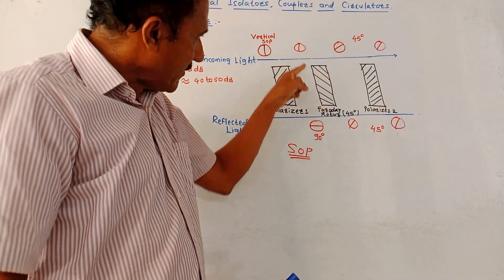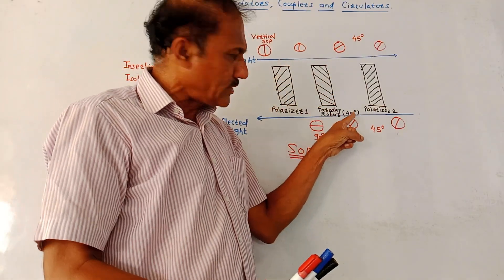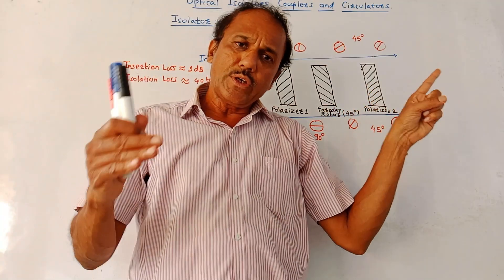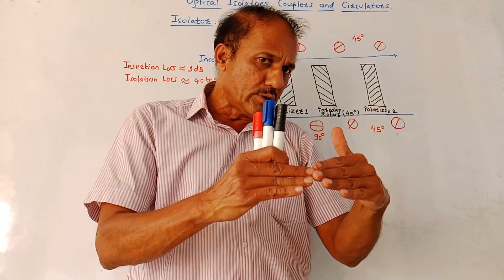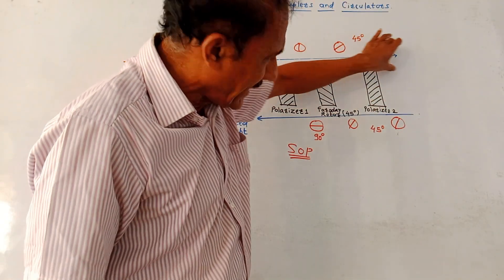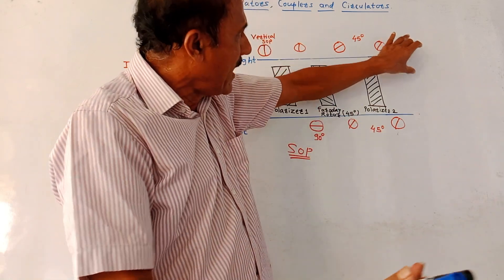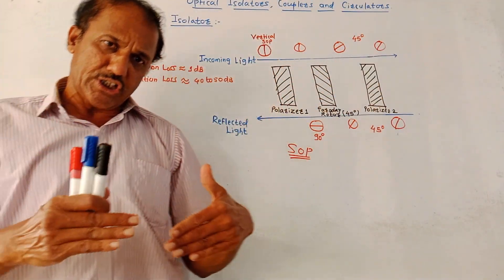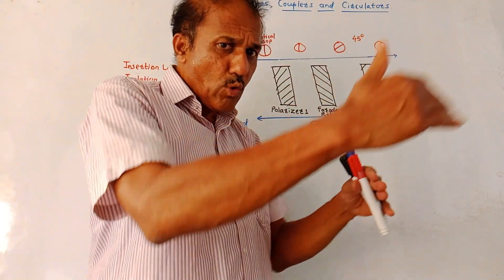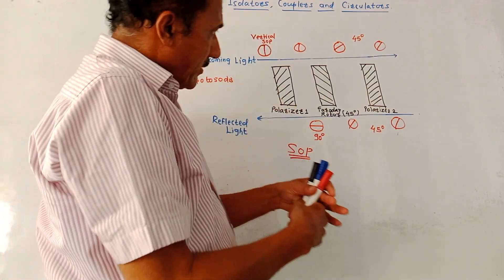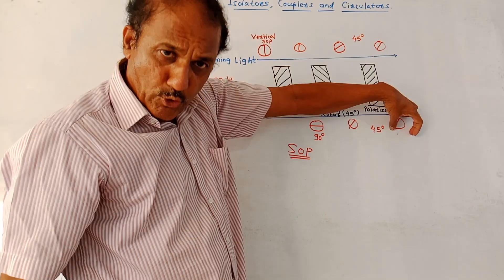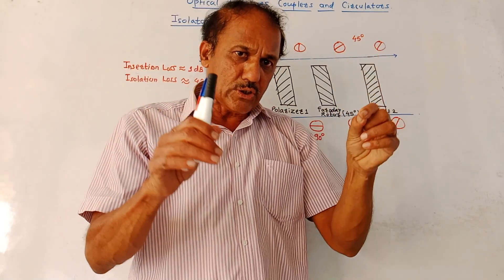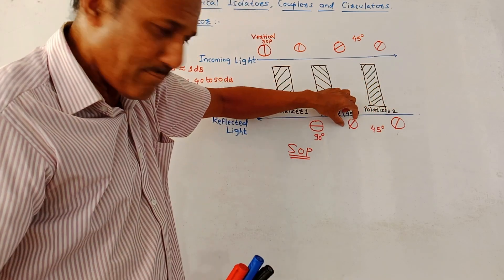The light after polarizer 1 is again having vertical polarization. When this light passes through the Faraday rotor, it produces a 45-degree rotation. Polarizer 2 is designed to allow light rays having 45-degree rotation. So this light ray will directly pass through polarizer 2 ideally without any attenuation, and there is transmission of the light ray from source to the detector. Now if there are any reflections from the detector, the reflected light ray will move in the backward direction, having 45-degree polarization. Polarizer 2 will permit this light ray as it is designed to pass only light rays having 45-degree rotation.